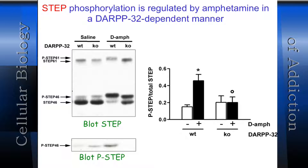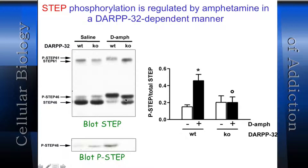We went further to see if the PP1-DARPP system could regulate STEP, which in turn could regulate ERK. In experiments in whole animals given saline or amphetamine, looking at STEP-61 and STEP-46 by SDS-PAGE gel mobility shift — indicative of phosphorylation — in wild-type mice, stimulation with amphetamine gives this gel shift. But in DARPP-32 knockout mice, you don't get the gel shift and no phosphorylation.